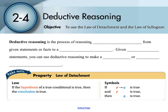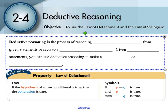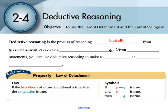First of all, let's go ahead and define what deductive reasoning is. Deductive reasoning is a process of logical reasoning from statements that are given or facts to a conclusion. So if we're given true statements, we can use deductive reasoning to make a valid or true conclusion.